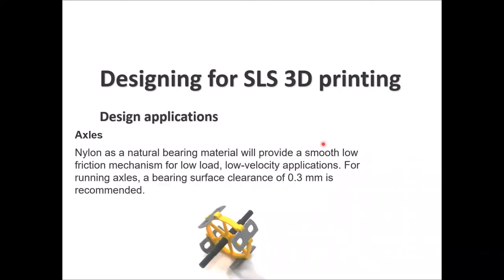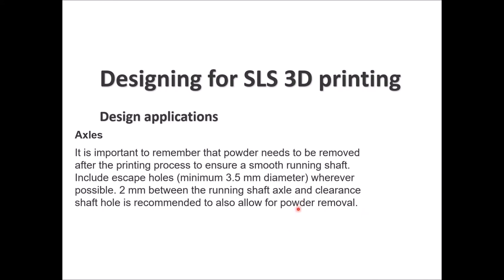For axle design applications in SLS, nylon is preferred as it is a natural bearing material providing smooth, low-friction operation for low-load, low-velocity applications. For running axles, a bearing surface clearance of 0.3 mm is recommended. Ensure powder is removed after printing so the part runs smoothly without grinding. Escape holes of at least 3.5 mm in diameter should be included wherever possible, with 2 mm clearance between the running shaft axle and the shaft hole to allow powder removal.